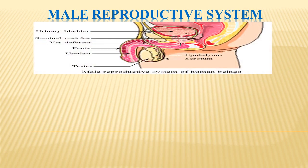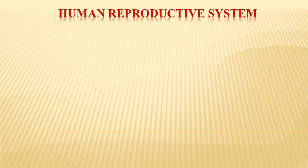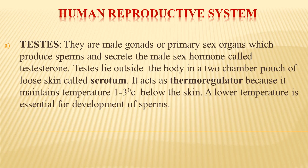The male reproductive system contains a pair of testes, vasa efferentia, a pair of epididymis, seminal vesicles, prostate gland, and penis. The testis is the primary sex organ — a male reproductive organ that produces male sex cells known as sperms and secretes the male sex hormone testosterone. The testes lie in a two-chambered pouch of loose skin outside the body called the scrotum, which acts as a thermoregulator, maintaining a temperature of around 1 to 3 degrees Celsius lower than body temperature, which favors sperm development.